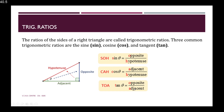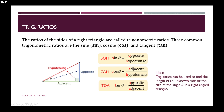A way to remember these three formulas is to use the mnemonic SOH CAH TOA. The trigonometric ratios can be used to find the length of an unknown side or the size of an angle theta in a right-angle triangle.